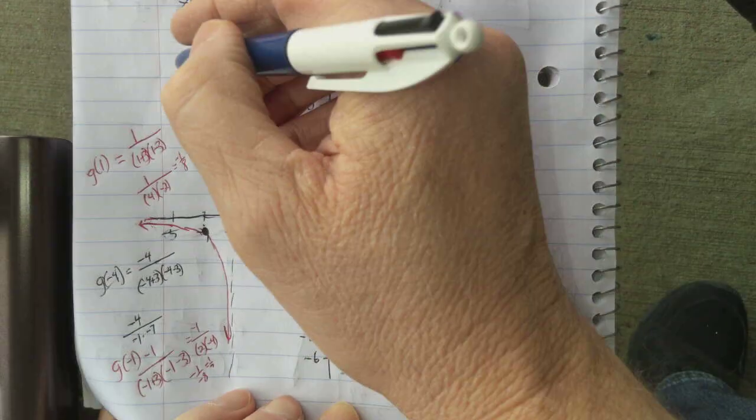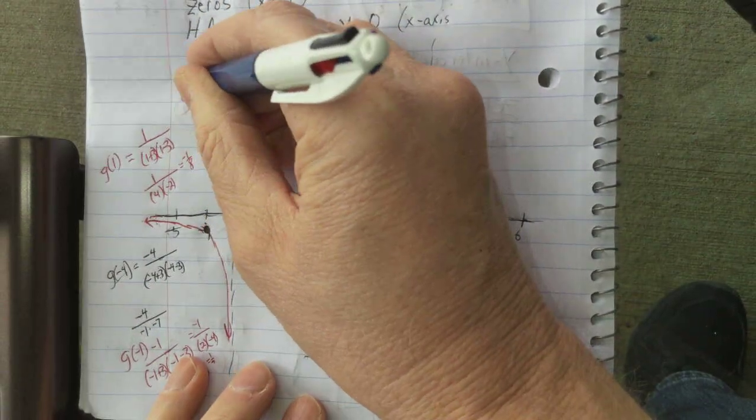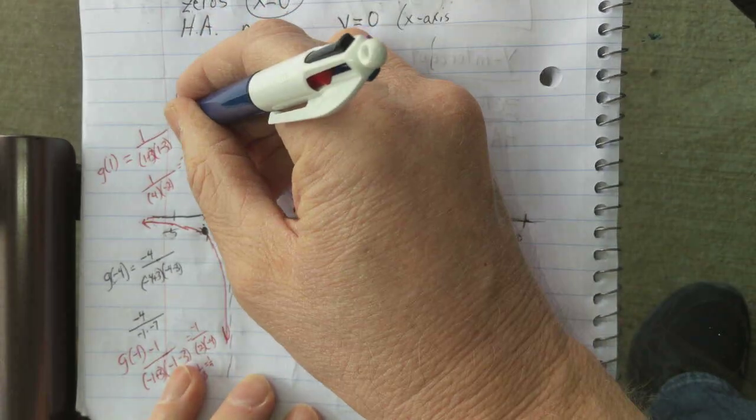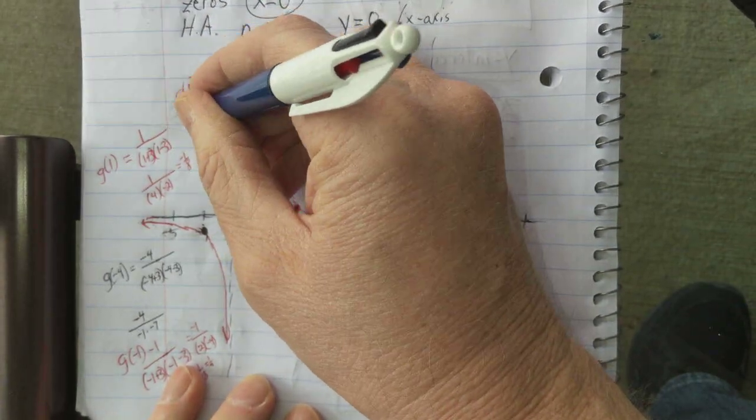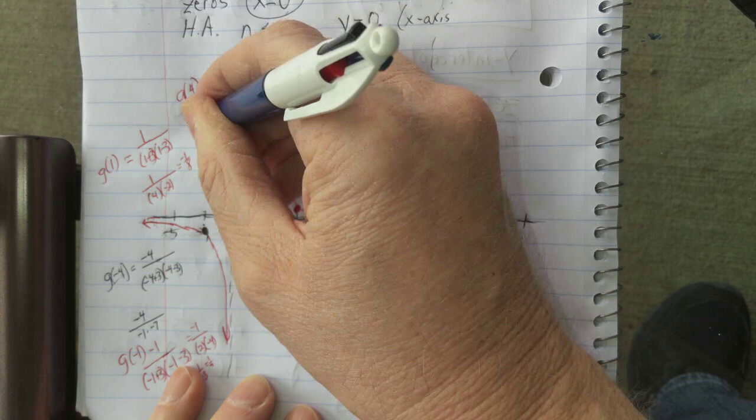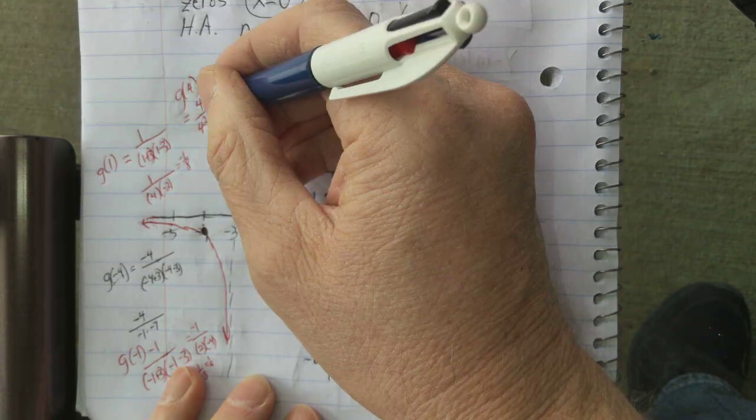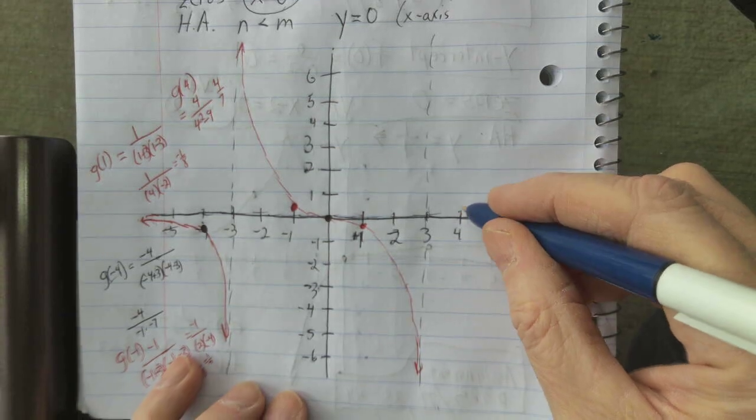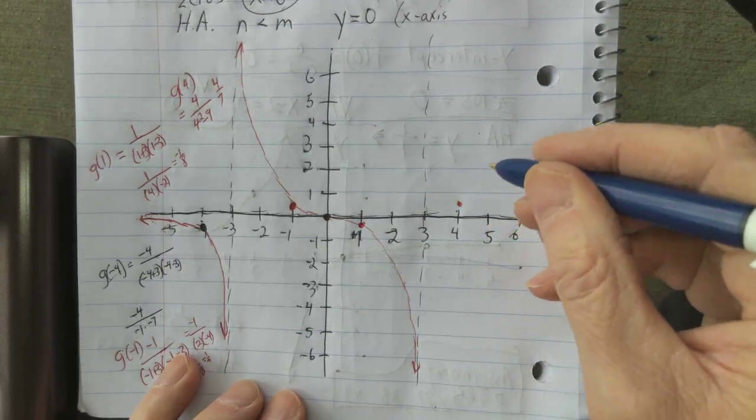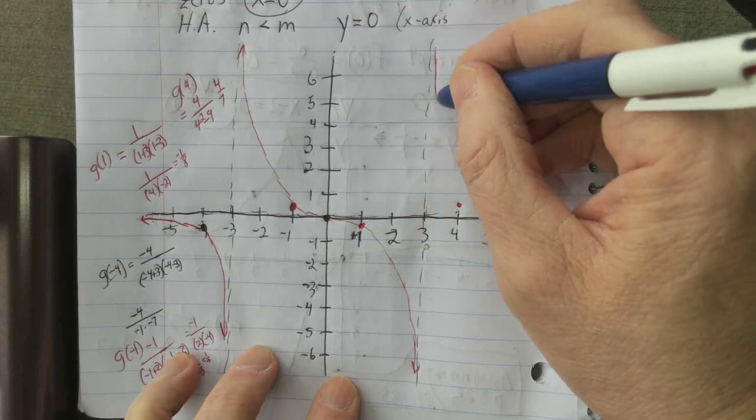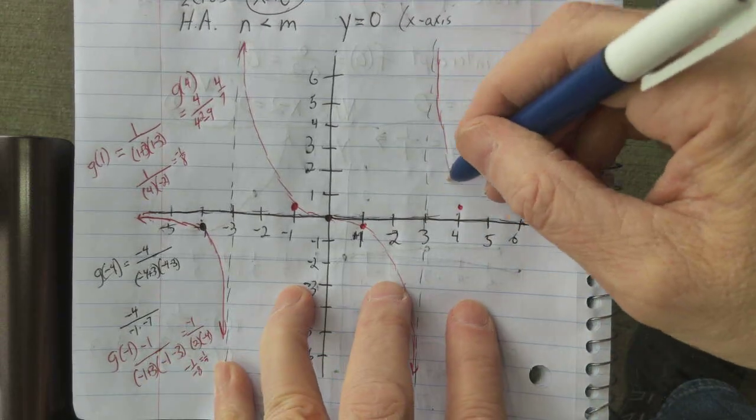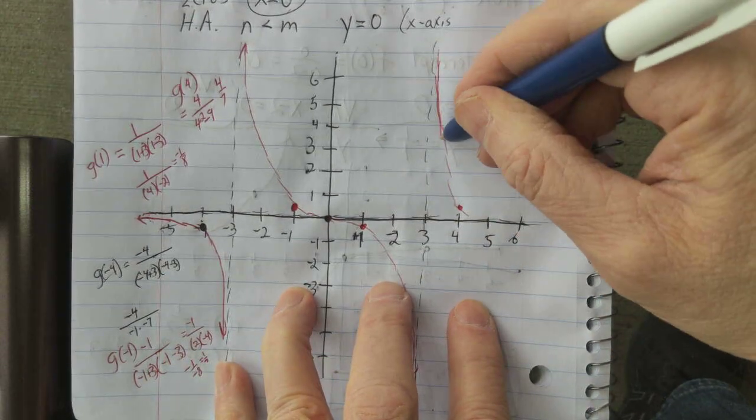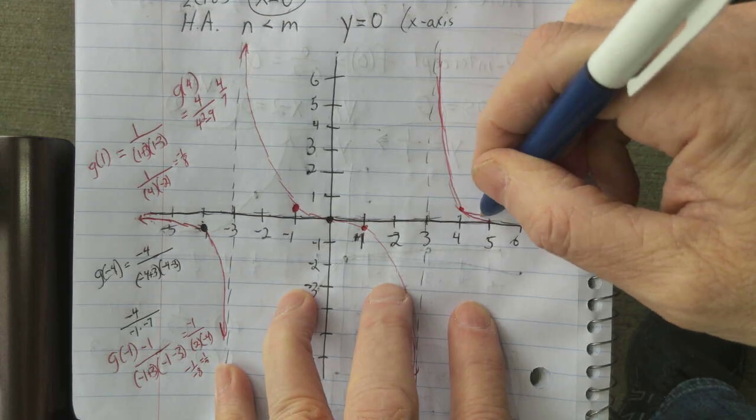And I'm going to use 4 and find g of 4. And that is, this time I'll just leave this square in. 4 over 4 squared minus 9. And that's 4 over 7. That's positive 4 and positive 4, 7. So that's up here. So we're going to come down from this asymptote to here. And then toward this asymptote.